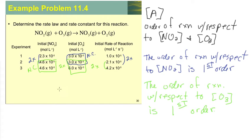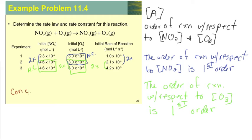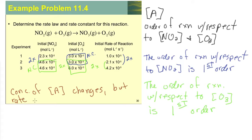In terms of other orders: if the concentration of any reactant — call it A — changes by any factor, whether it doubles, triples, quadruples, is cut in half, or changes by one-fourth or one-sixteenth, but the rate does not change, then with respect to the concentration of reactant A, that would be zeroth order.